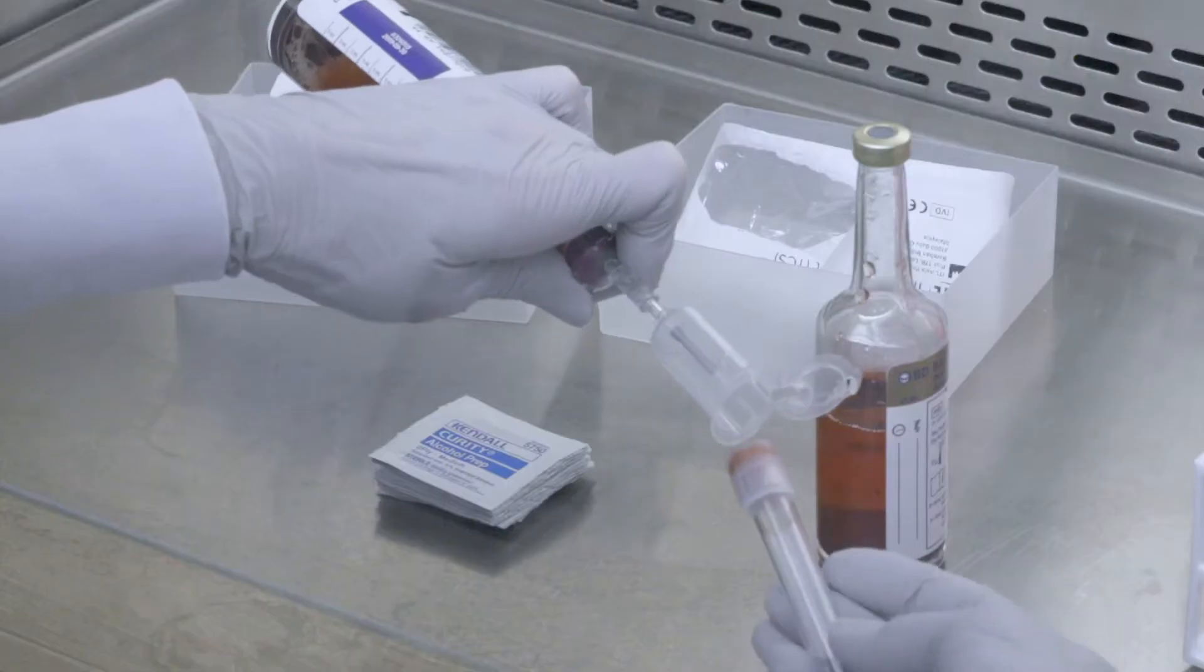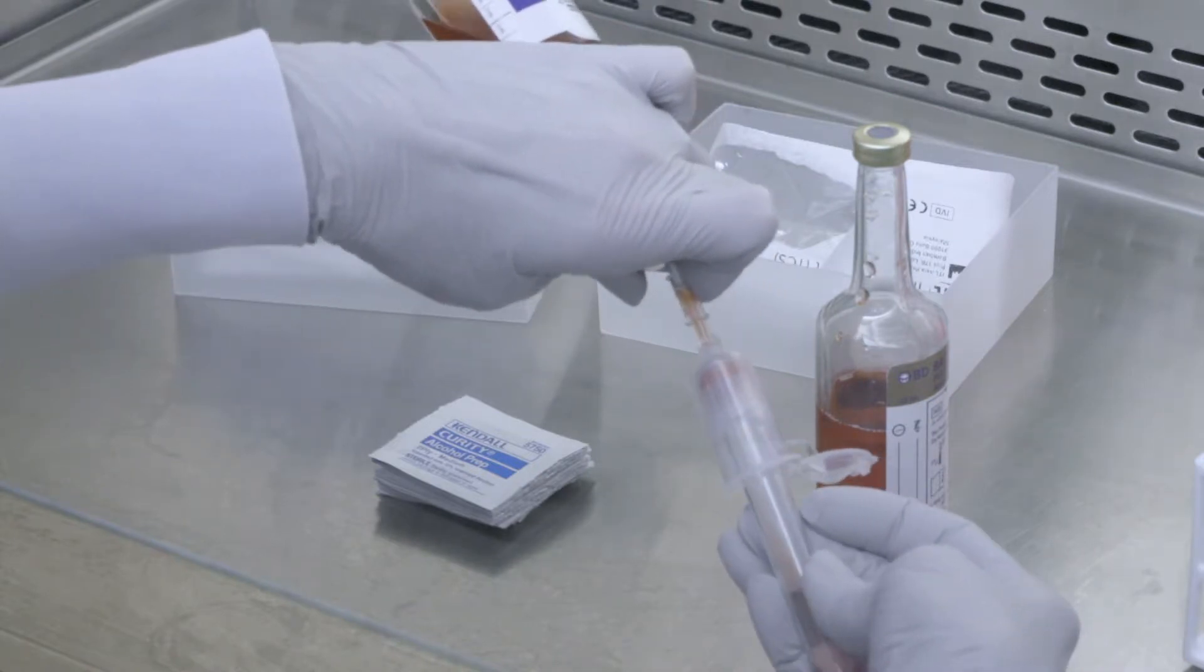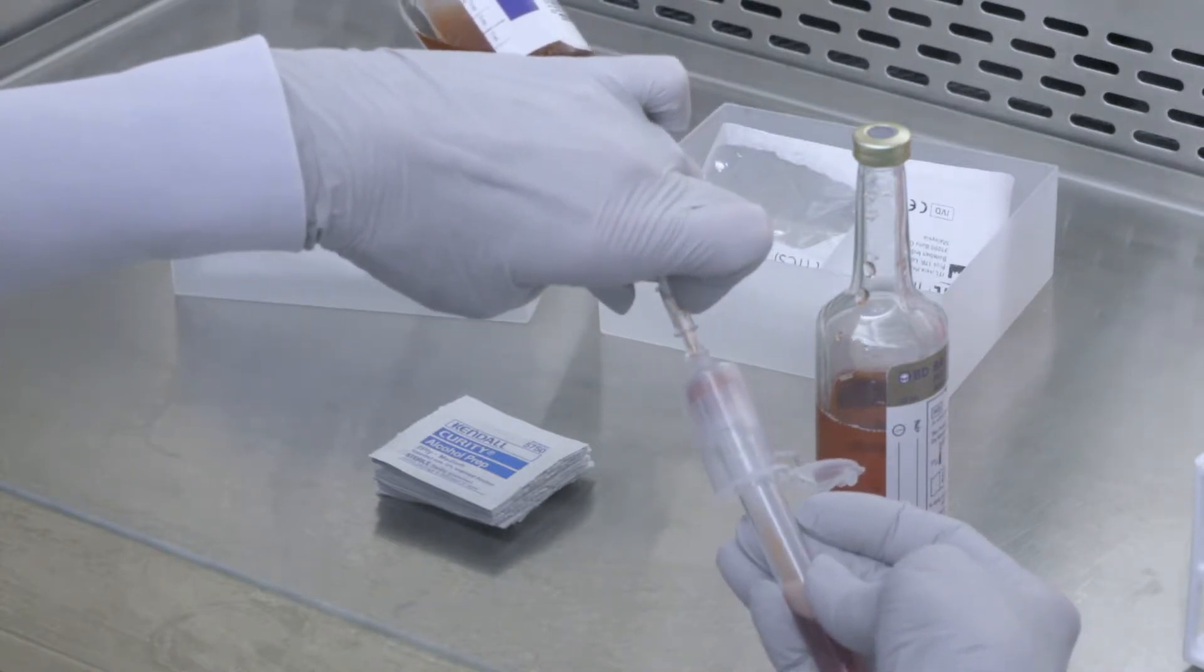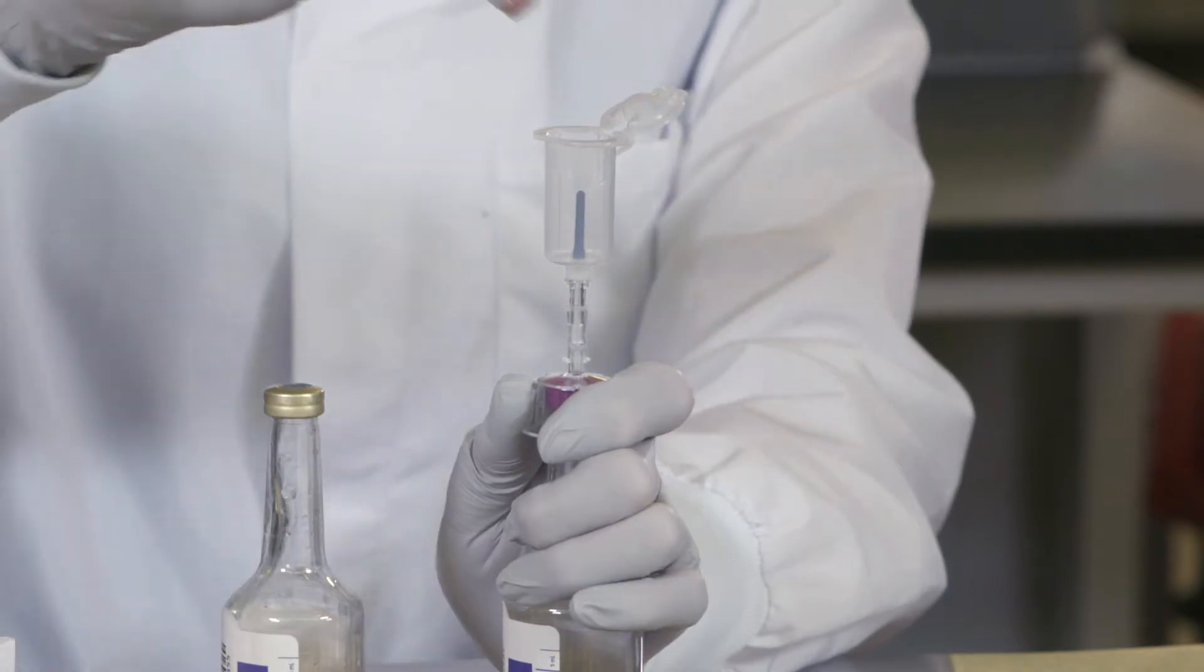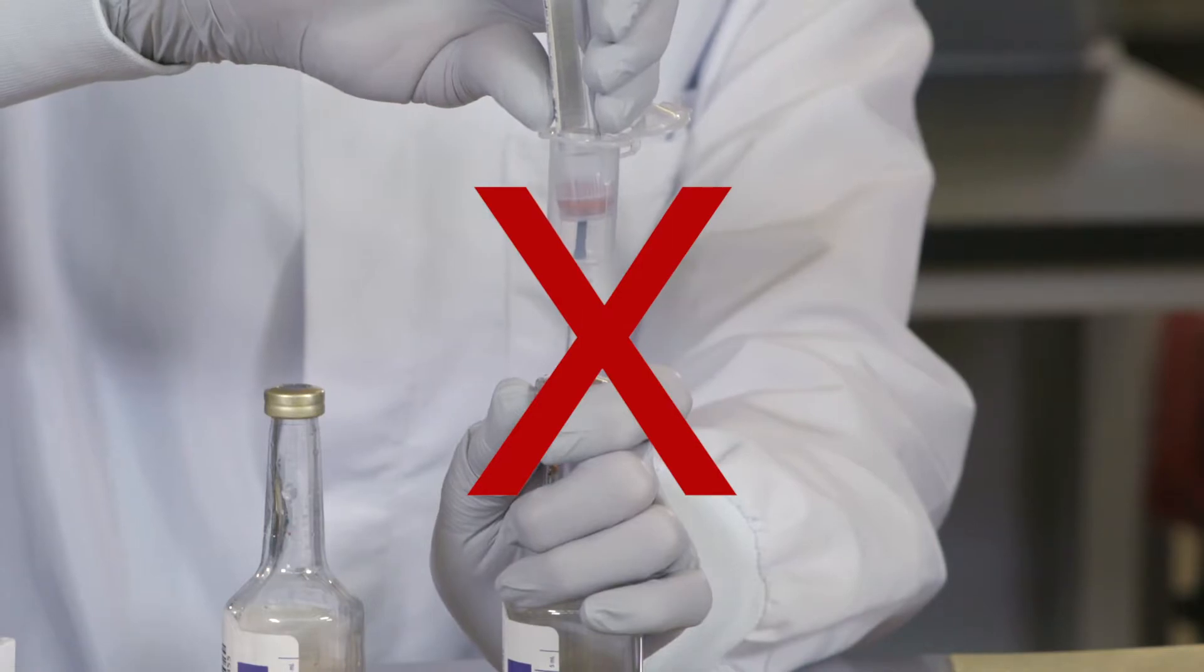Now, insert the vacuum tube into the tube holder. Sample from the culture bottle will begin to transfer into the vacuum tube. Note that sample will only transfer into the vacuum tube when the culture bottle is tilted at a downward angle.